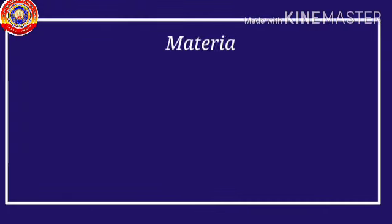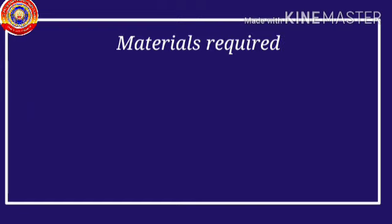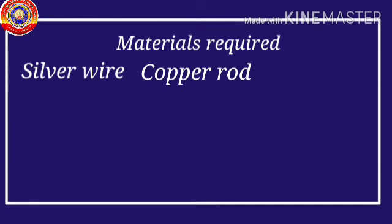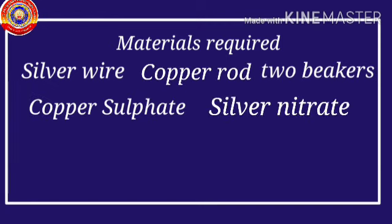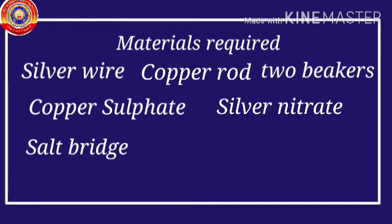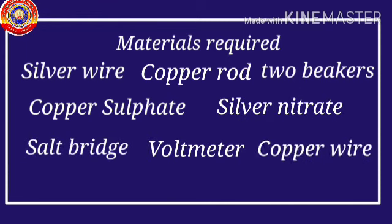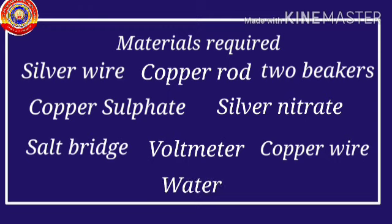Let's see a textual question. The materials required for a galvanic cell are given: silver wire, copper rod, two beakers, copper sulfate, silver nitrate, salt bridge, voltmeter, copper wire, water, etc.